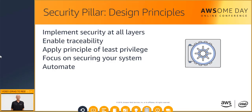Focus on securing your system. With the AWS Shared Responsibility Model, you can focus clearly on securing your application, data, and operating systems, while AWS provides secure infrastructure and services. Finally, automate security best practices — software-based security mechanisms improve your ability to securely scale more rapidly and cost-effectively. For example, create and save a patched, hardened image of a virtual server so that when you need an image, you can use it automatically to create a new instance. Another best practice is to automate the response to both routine and anomalous security events.